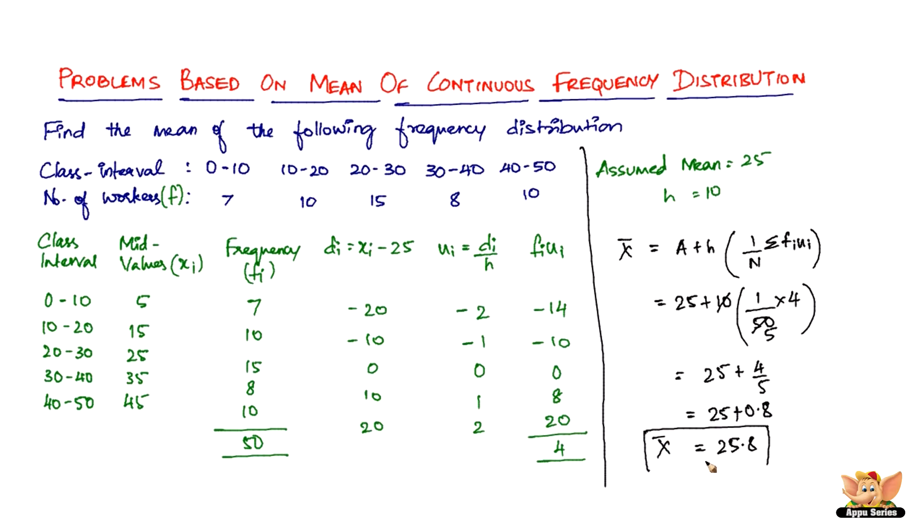So we've got 25.8. So that is the mean. The mean of the continuous frequency distribution given here is exactly 25.8. I repeat, the only difference between this frequency distribution, the continuous frequency distribution and the grouped data, is that you need to just change the class intervals, convert them to mid values. So that's this video, that's this problem.